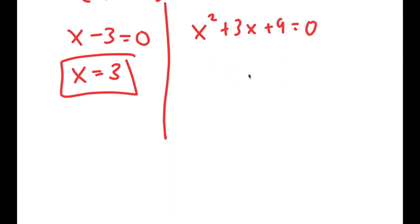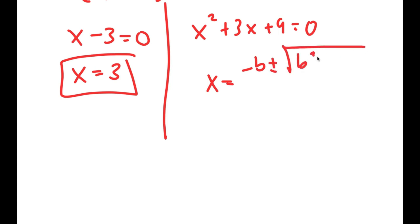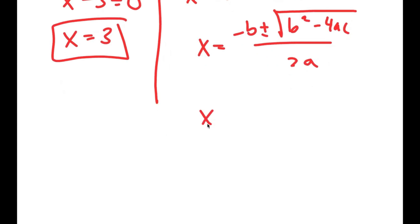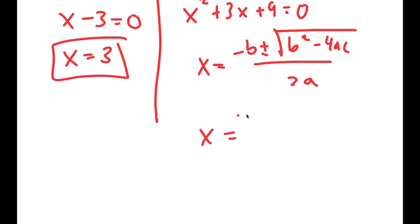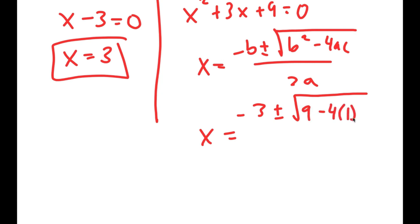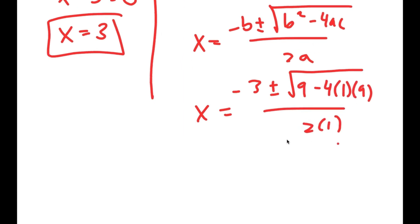And now for x squared plus 3x plus 9 equals 0, I can use the quadratic formula, which is negative b plus or minus the square root of b squared minus 4ac, all over 2a. So this turns into negative 3 plus or minus the square root of 3 squared, which is 9, minus 4 times a, which is 1, times c, which is 9, all over 2a, so 2 times 1.